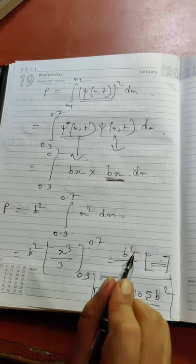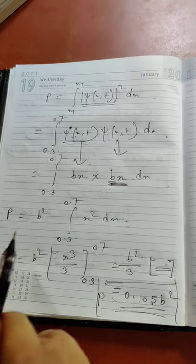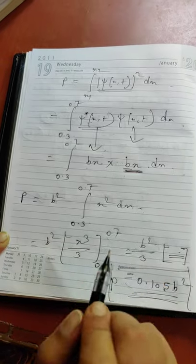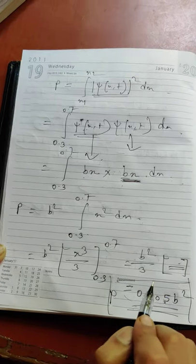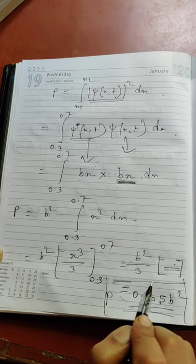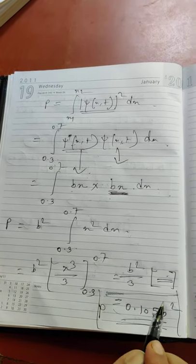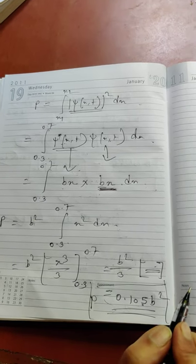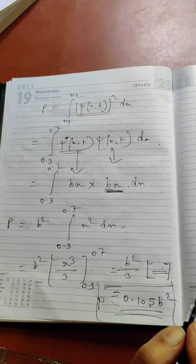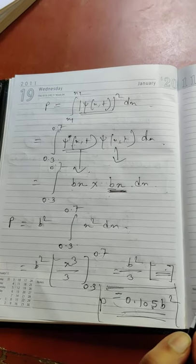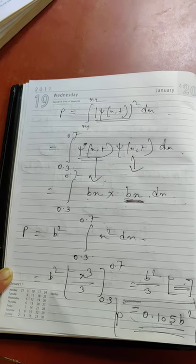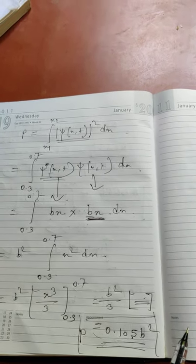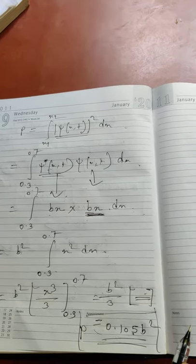For this particle, the wave function is given as bx and it exists between 0 to 1; in other regions, it has zero value. In this way, if we know the wave function of a particle, we can calculate the probability of finding the particle and find out the probability density of that particle.